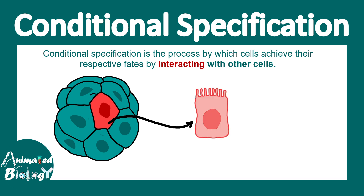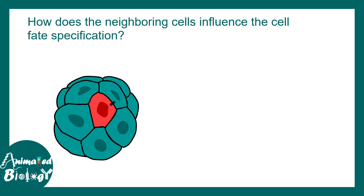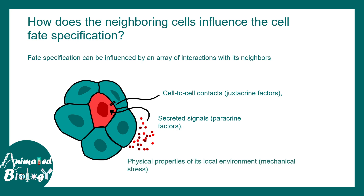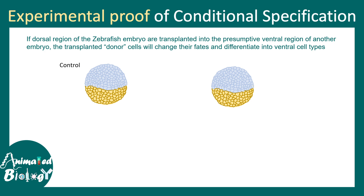The moral of the story is: neighbors matter. The question is how do neighboring cells influence the fate specification of a particular cell. There are many ways of doing this — one way is cell-to-cell contact, known as juxtacrine signaling. There can also be secreted signals such as paracrine signaling factors interpreted by the red cell. Apart from these, physical properties like mechanical stress and rigidity of the extracellular environment can also govern fate specification.